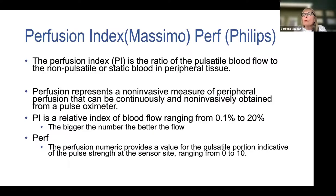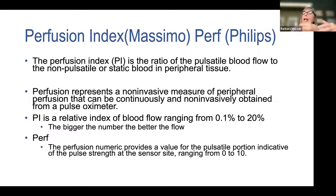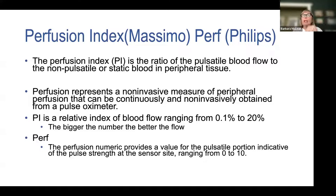The perfusion index is a digital display showing the pulsatile quality of blood flow. It is the ratio of pulsatile blood flow versus non-pulsatile or venous blood flow in peripheral tissue. This was developed to validate the pleth signal for pulse oximetry but also serves as a non-invasive measurement of pulsatile perfusion. On Masimo, a value of 0.1 or less indicates very poor flow; higher is better. The same principle applies to the PERF numeric on Philips monitors.